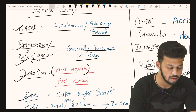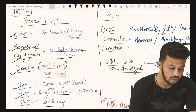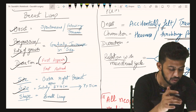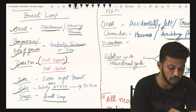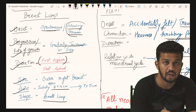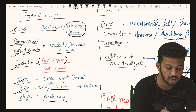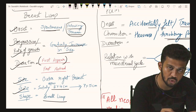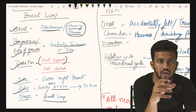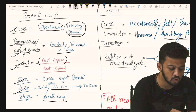The key points to ask the patient about the breast lump include: onset — whether it is spontaneous or following any kind of trauma. If following trauma, there can be fat necrosis, which can also present as a hard lump. Usually onset is spontaneous.